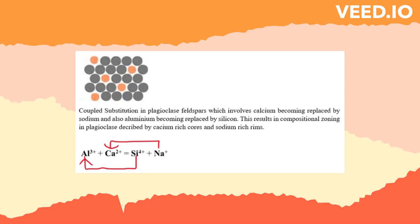For example, in Plagioclase Feldspars, there is a reaction between Aluminum 3+ and Calcium 2+ to give Silicon 4+ and Sodium 1+. When Plagioclase changes composition during a reaction with the melt, it requires a coupled reaction — not only does some calcium become replaced by sodium in a site with coordination numbers 6 to 8, but to maintain electronic neutrality, some aluminum must be replaced by silicon in the tetrahedral site. This is a slow process and often results in incomplete reaction, so that compositional zoning of Plagioclase crystals results in calcium-rich cores and sodium-rich margins or rims.